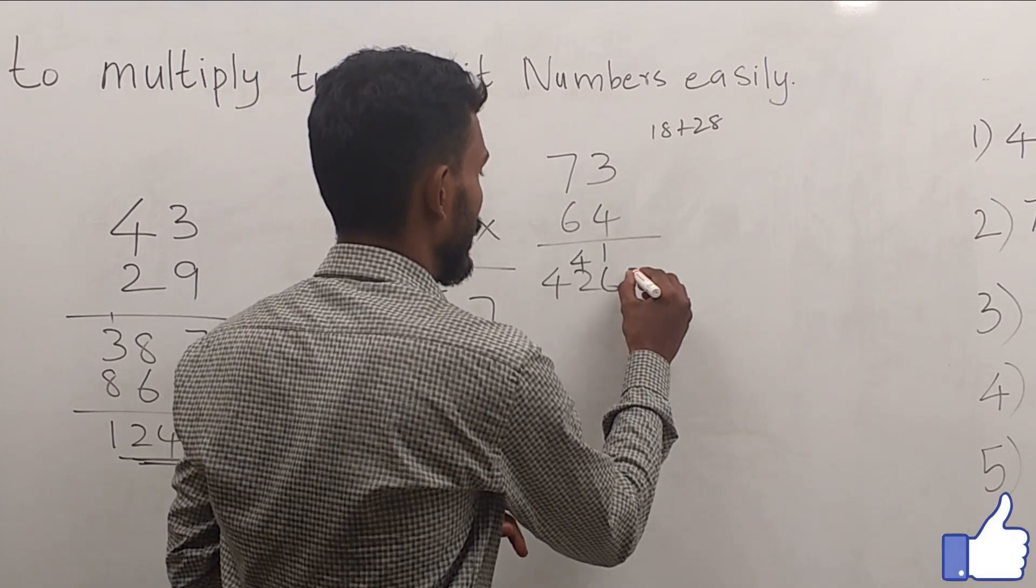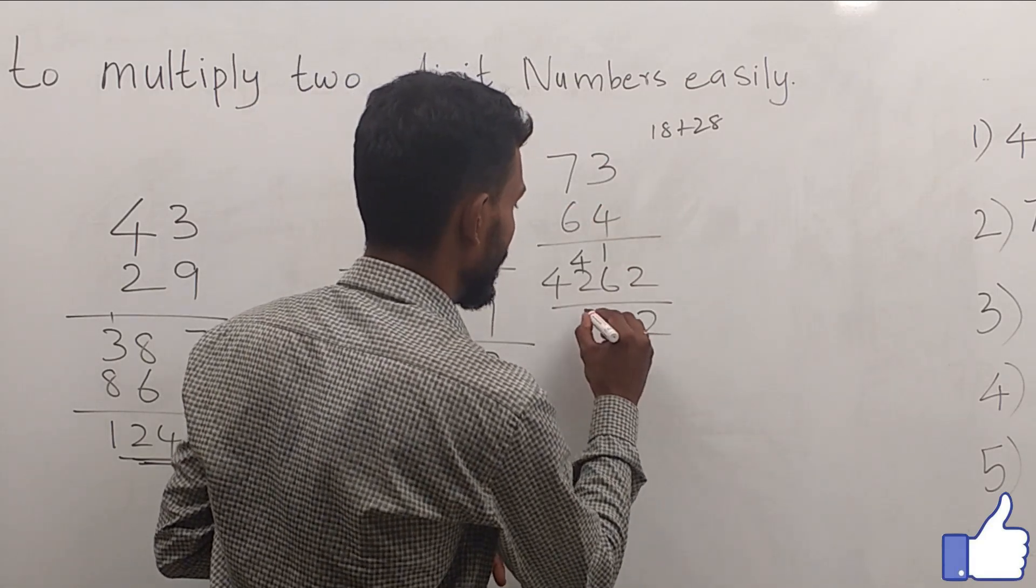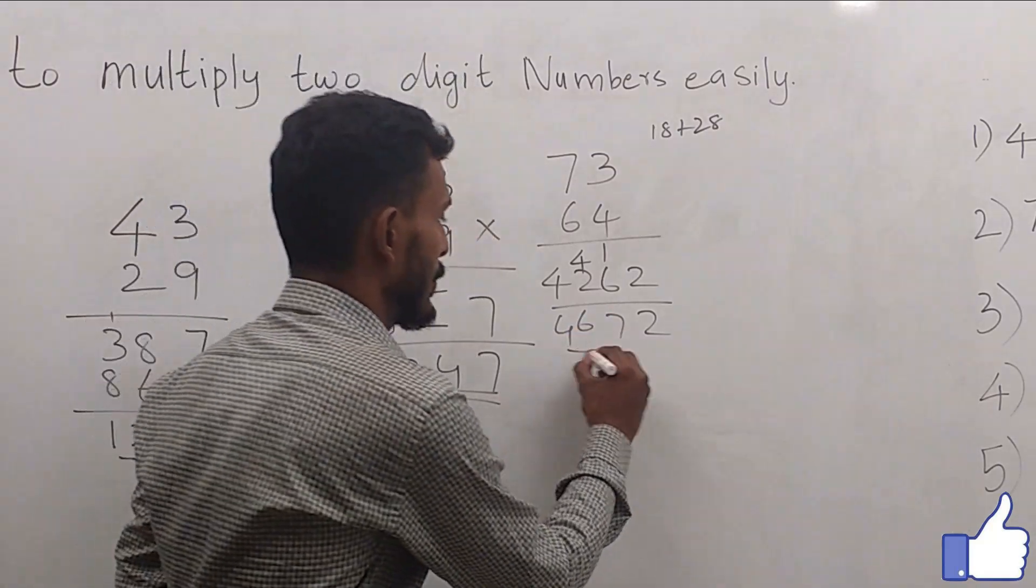Then 3 × 4 = 12. So we get 2, 7, 6, 4. The answer is 4672.